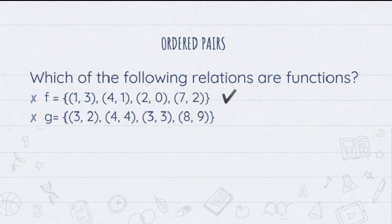Next, let's have relation g. Looking at the x values, we have 3, 4, 3, 8. The value 3 was repeated twice under the ordered pairs (3,2) and (3,3). Therefore, this relation is not a function.